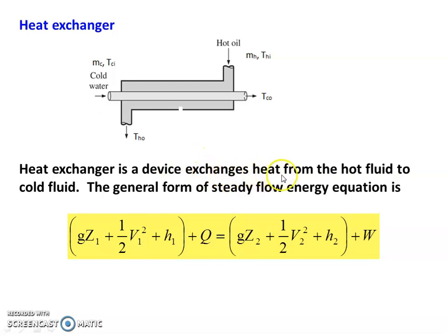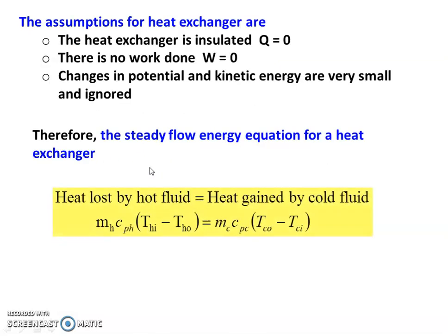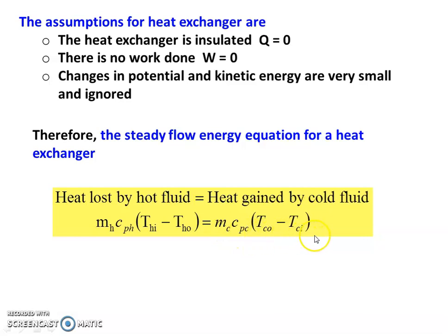For the heat exchanger, the general SFEE is: gZ1 + (1/2)V1² + H1 + Q = gZ2 + (1/2)V2² + H2 + W. With assumptions Q = 0, W = 0, and potential and kinetic energy changes are very small and ignored, the steady flow energy equation for a heat exchanger becomes: heat lost by the hot fluid equals heat gained by the cold fluid. That is: ṁh · Cph · (Thi − Tho) = ṁc · Cpc · (Tco − Tci).